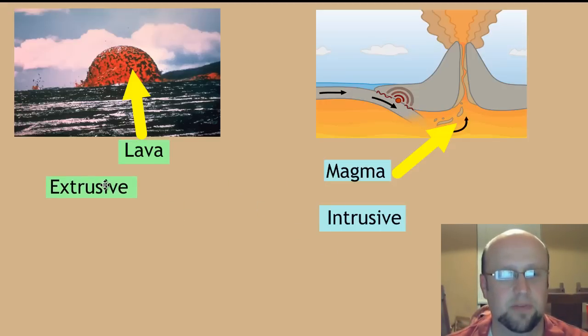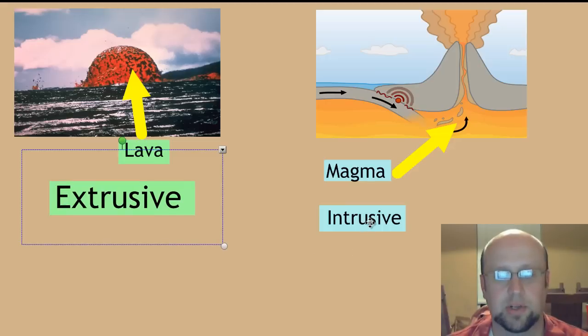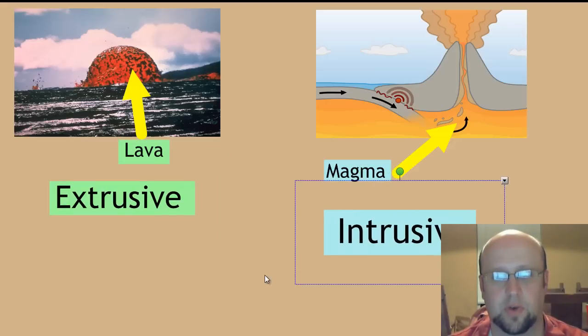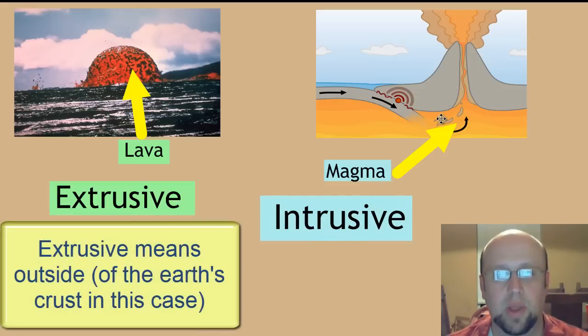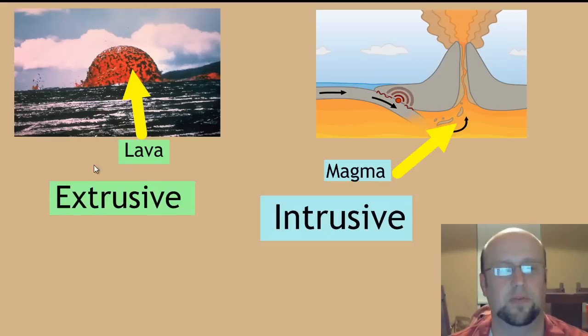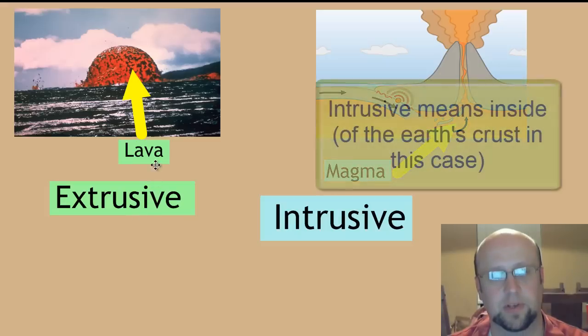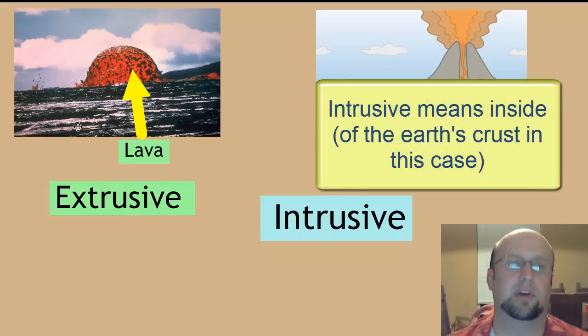This leads us to two important definitions: extrusive and intrusive. When rocks are formed underground, they're called intrusive rocks. When rocks are formed on the surface, they're called extrusive. Most of the time, if rocks are formed on the surface, they're going to be as lava cools, and that's extrusive types of rocks.